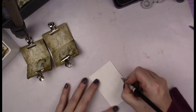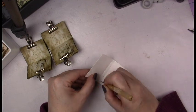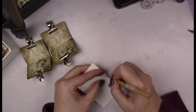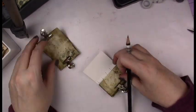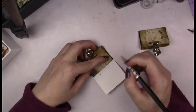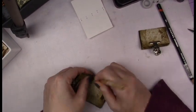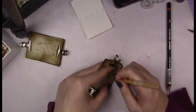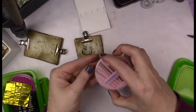I took this clay tool, essentially just a thick needle, and I measured out where I wanted the holes to go on the paper according to where the holes were on the outside binding. I popped those holes in the paper as well.